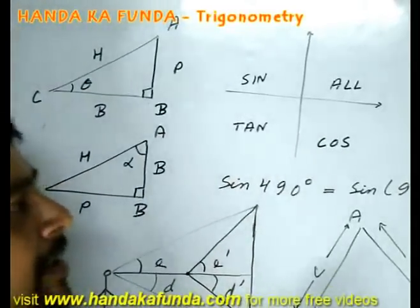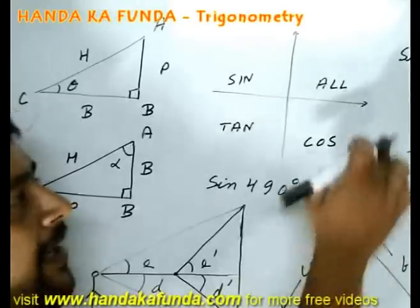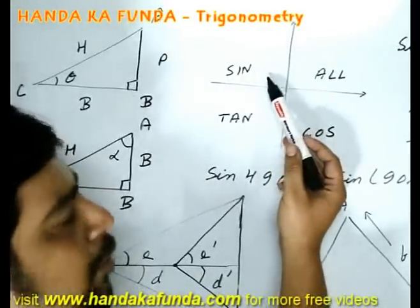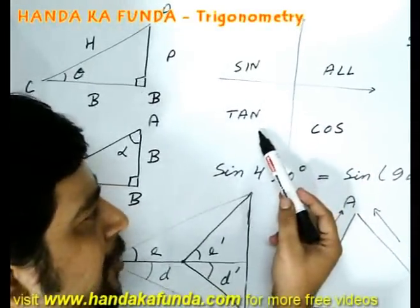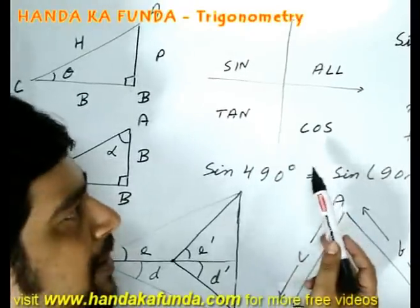It is also important to realize how these sines and cosines and all those angles behave in case of quadrants. In the first quadrant all of them are positive. In the second quadrant only sin is positive. In the third quadrant only tan is positive. In the fourth quadrant only cos is positive.